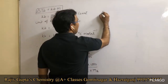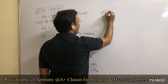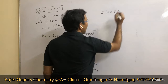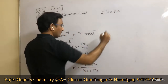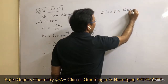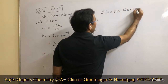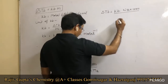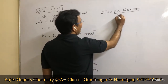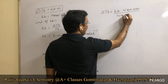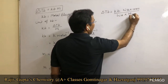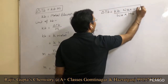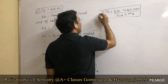This means molality equals Wb × 1000 upon Wa × Mb. Therefore ΔTb = Kb × Wb × 1000 / (Wa × Mb). This is the expanded formula for elevation in boiling point.